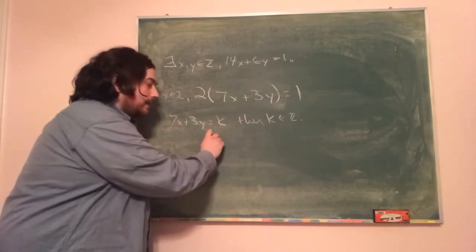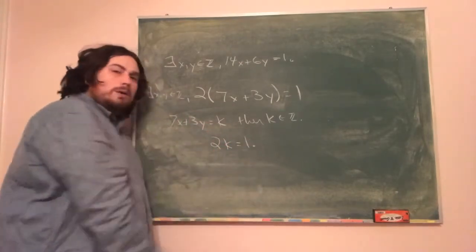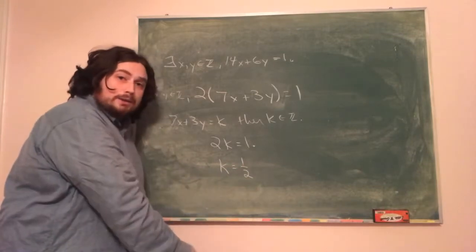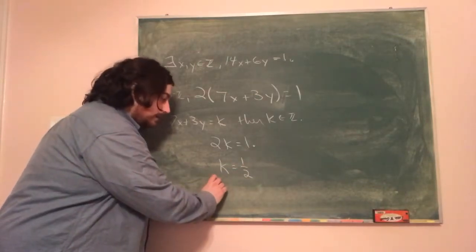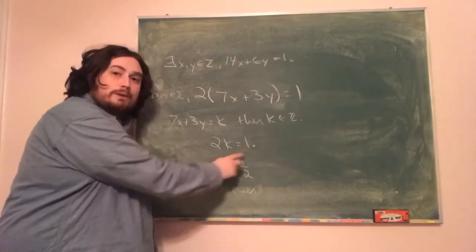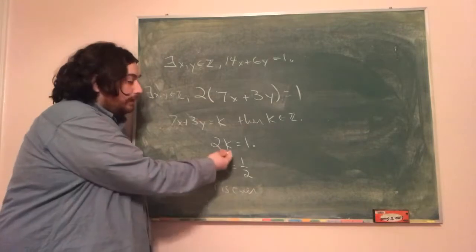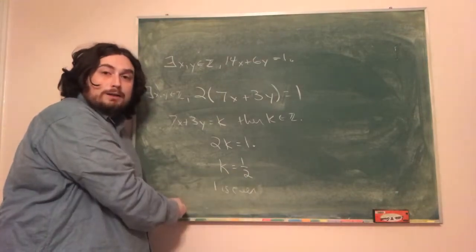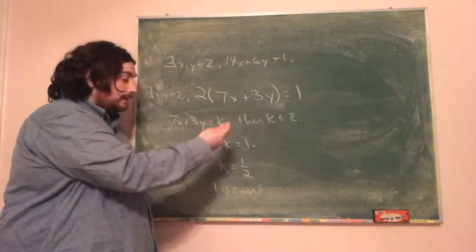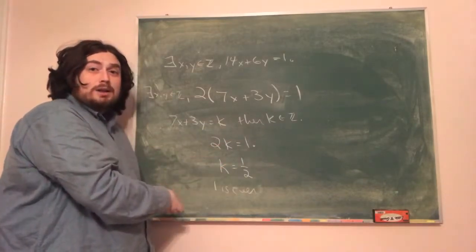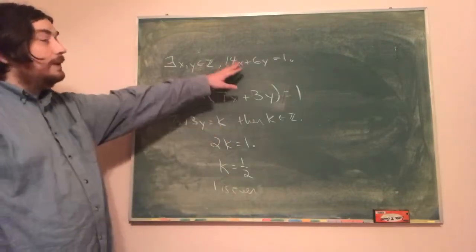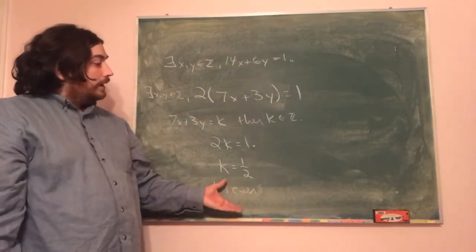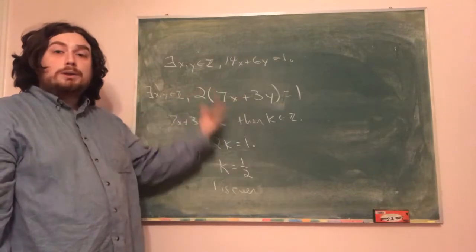That means 2 times k equals 1. What does that mean? Either k equals 1/2, which is not an integer, or we could say that 1 is even because 2 divides 1. Both of those are clearly not true, because 1 is not even and 1/2 is not an integer. So we have a contradiction. This means our assumed negation must be false, so our original theorem must be true.